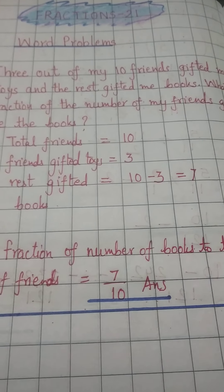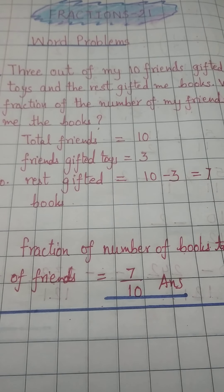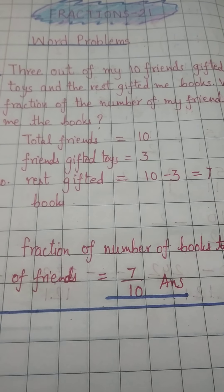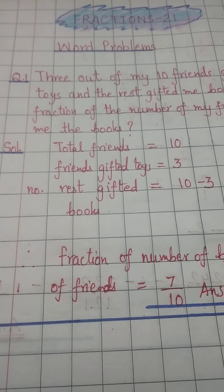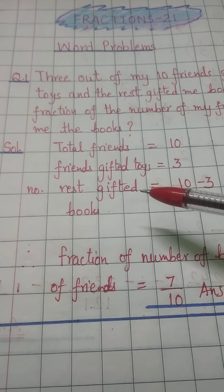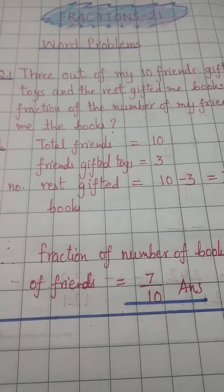So the question says: a child is saying that out of his 10 friends, three gave him toys and the rest gave him books for his birthday. We will first write the total number of friends, which is 10, and friends who gifted toys is 3. Whatever is given in the question, you write it down and think.